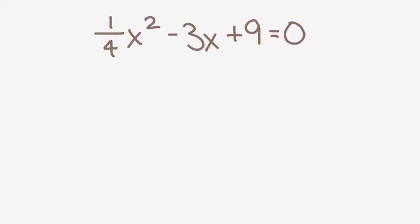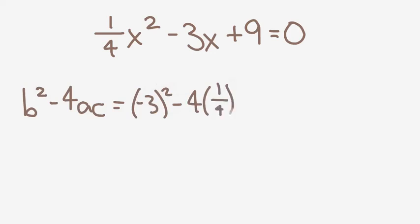For this quadratic equation, once again we'll write down the discriminant, b squared minus 4ac, and fill in the values. So b is negative 3, a is 1 over 4, and c is 9.